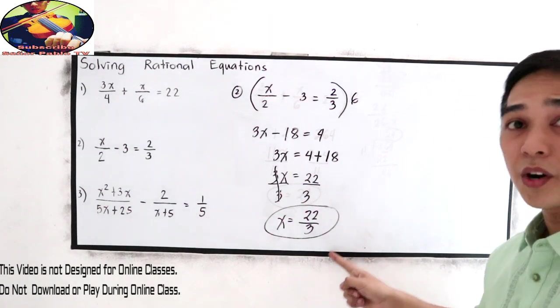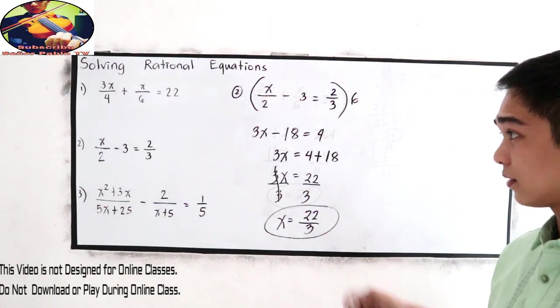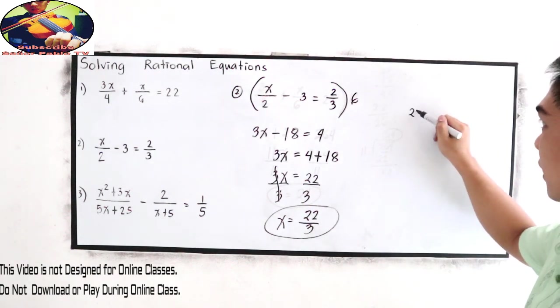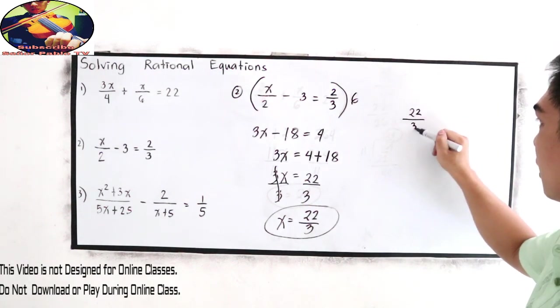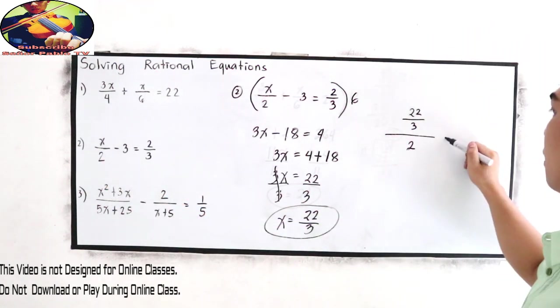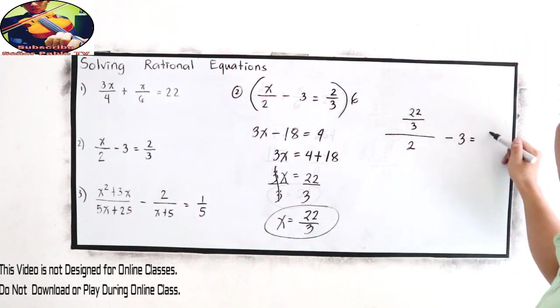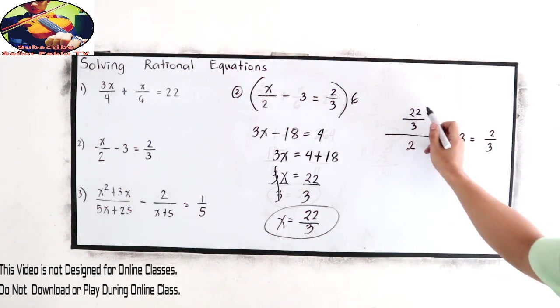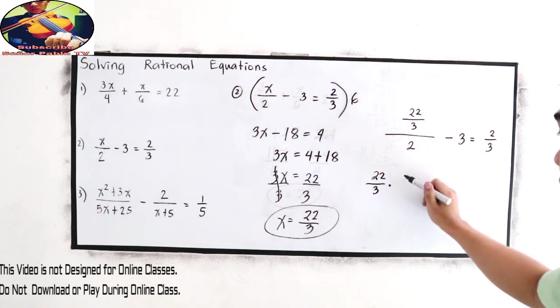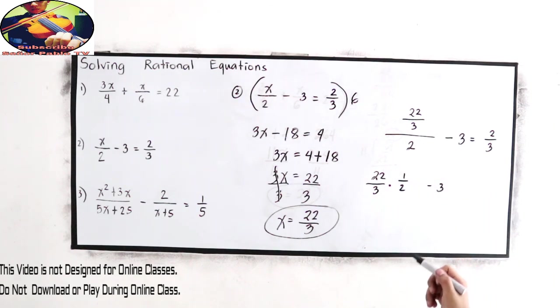Let's check if our answer is correct. Substitute 22 over 3 all over 2 minus 3 is equal to 2 over 3. Copy our numerator.